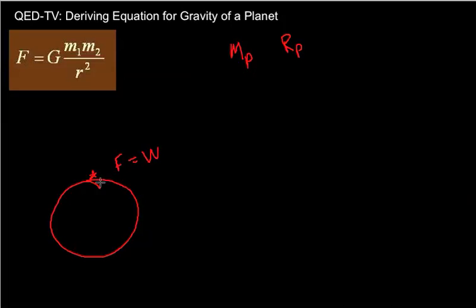That's also the force that you're pulling up on the earth. So whatever you weigh, that's how much you're pulling on the earth towards you. Of course, the planet's mass is huge, so it's not going to have a whole lot of acceleration towards you. Your mass is not that huge, so there will be a lot of acceleration from you towards the planet. And we know what that acceleration is — it's what we call gravity on the planet that we're on.